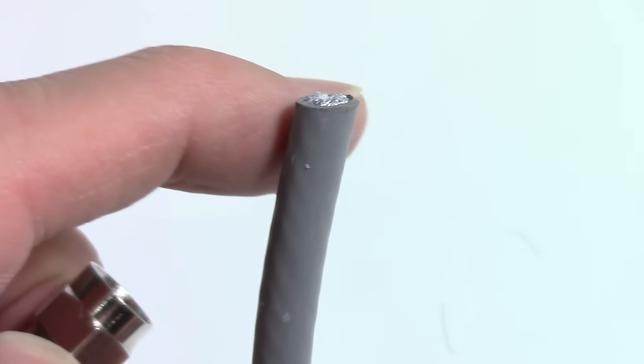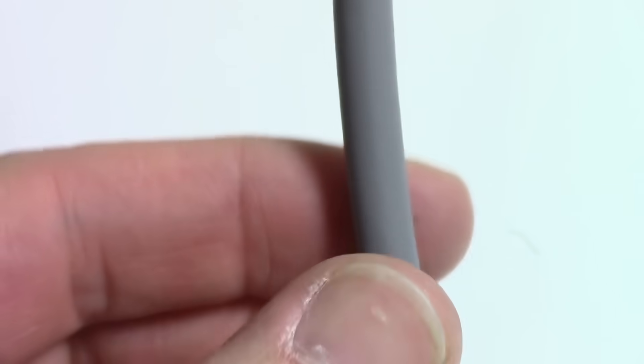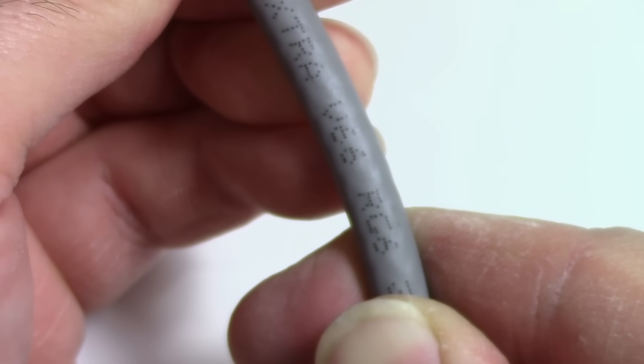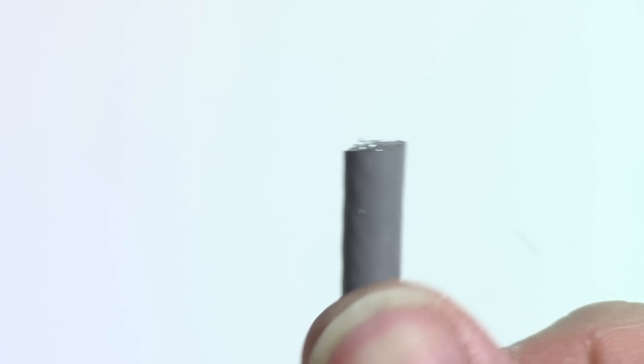So how do you get one of these on one of these? This is a coax cable. Specifically, it's an RG6.